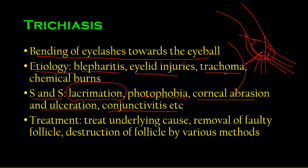Trachoma — a bacterial infection affecting the eyelid — is another cause, which we'll cover in a later lecture. Chemical burns also cause a similar problem: the eyelid burns and changes shape from its original form, and as a result the hair may grow towards the inside.